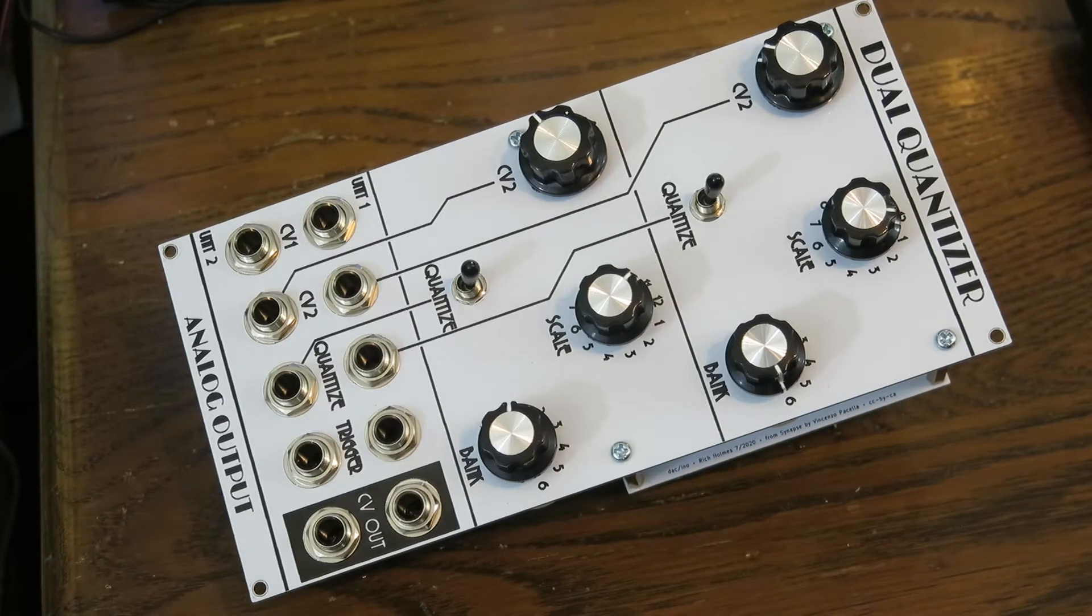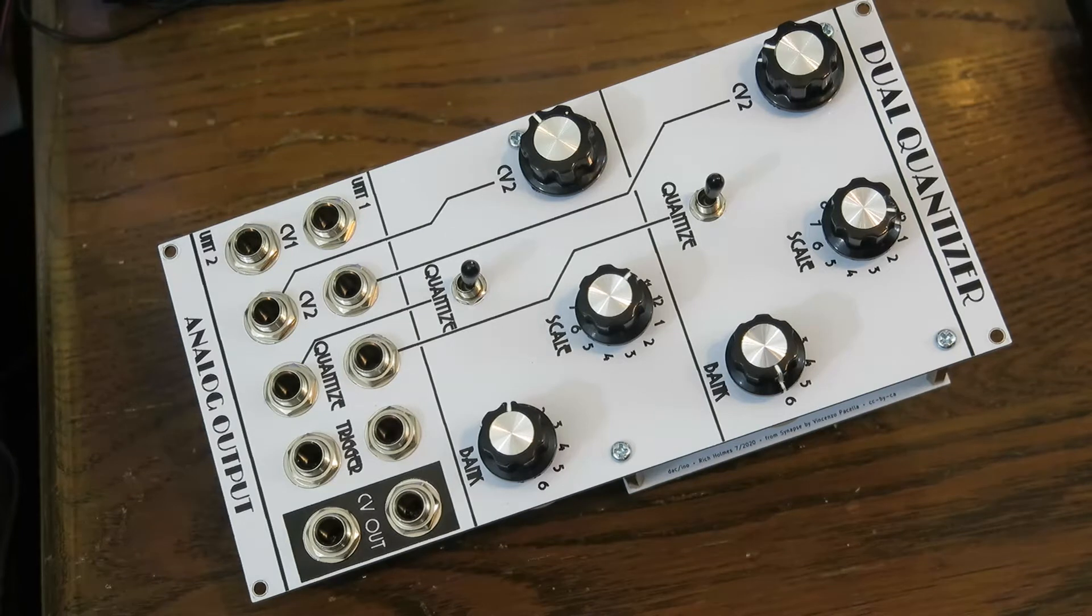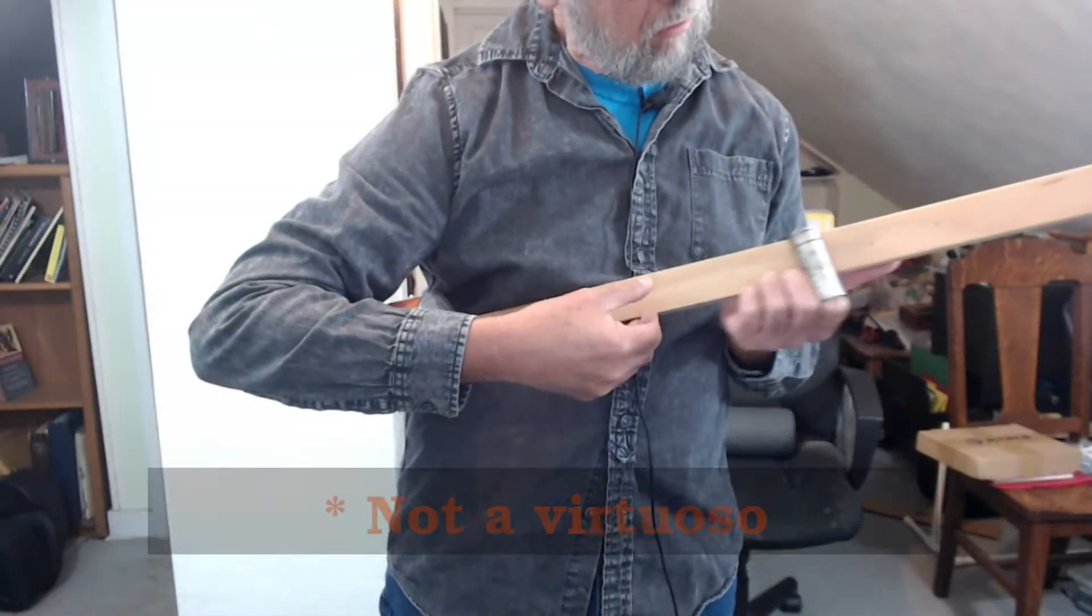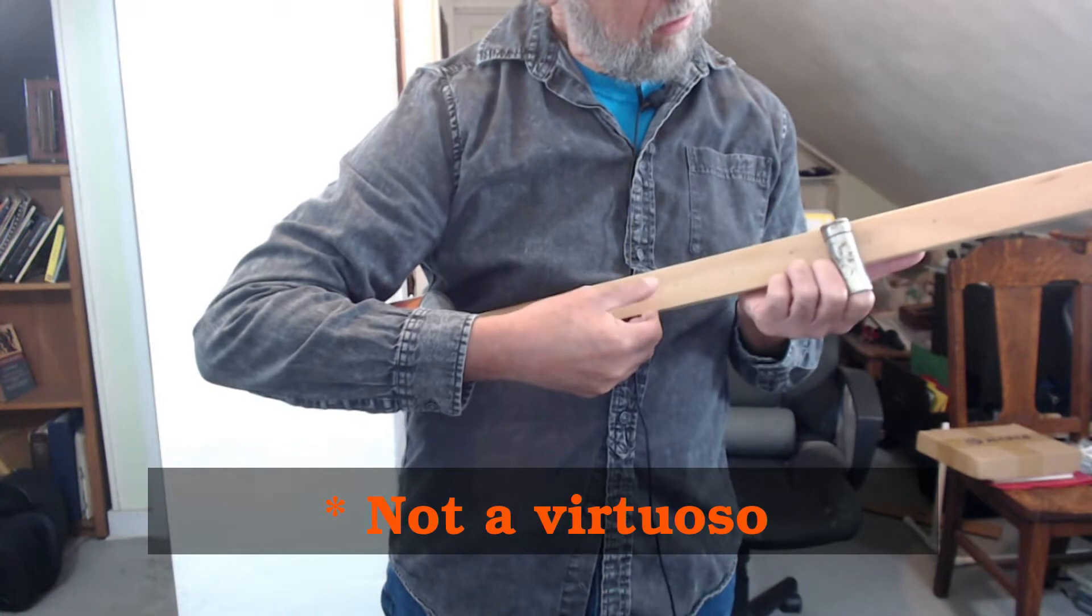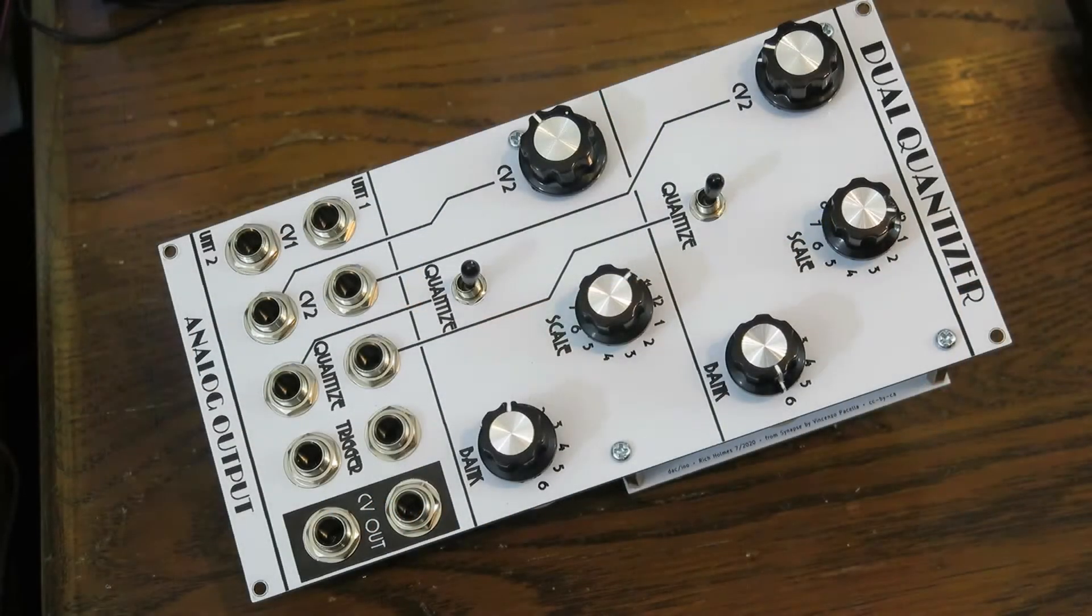So what is a quantizer? A quantizer, I kind of like to think of it as frets for a synthesizer. If you've got a fretless string instrument, like this diddly bow, wherever you put your finger makes a different note, and you can slide up and down the string, and you can get a continuous variety of different notes.